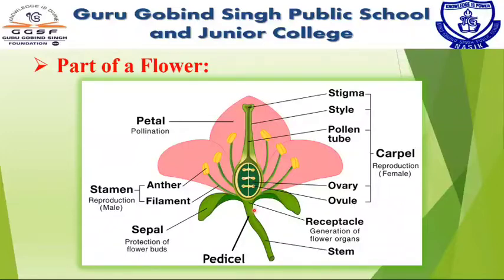Petals and other parts of the flower are supported on the receptacle. In the bud condition, the petals are covered by leaf-like parts called sepals, which are green in color. They form the calyx.